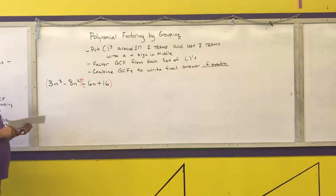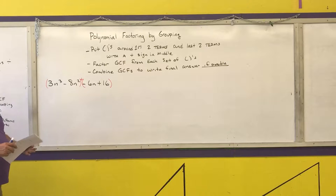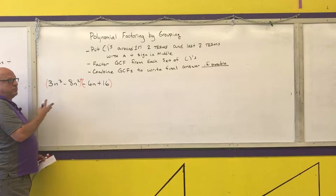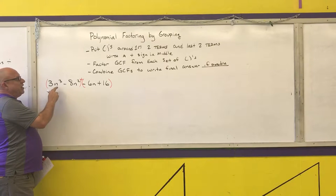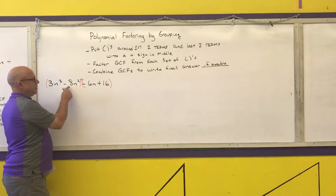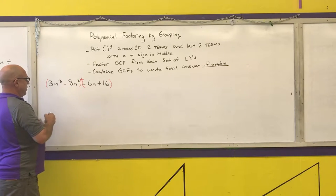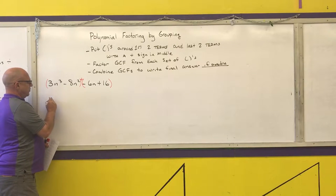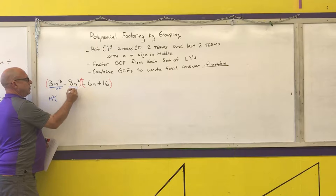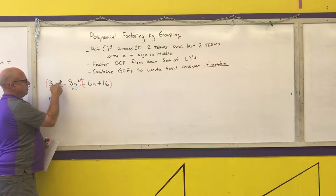Step two: factor the GCF from each set of parentheses. The greatest common factor between 3 and 8 is just one. Then write down the lowest power of every variable that appears in every term — n appears in both terms, and the lowest power is n squared. After division, I get 3n minus 8.